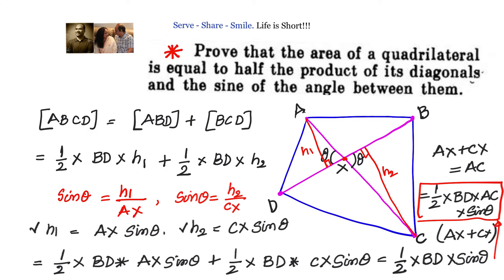So, the area of the quadrilateral, if we know the angle between the diagonals as theta and we know the length of the diagonals, is given by half into the product of the diagonals multiplied by the sine of the angle between them. This is exactly what we needed to prove.